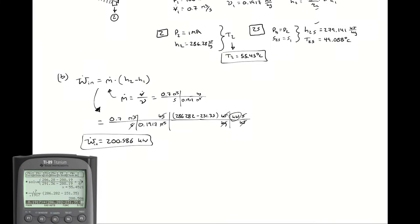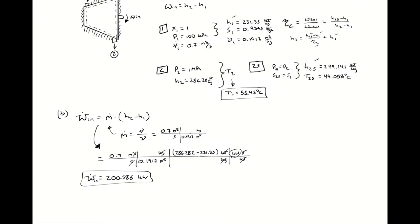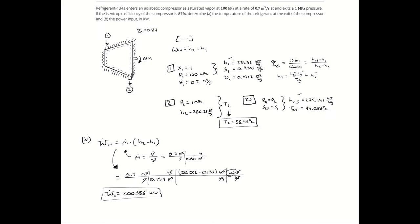So, with a compressor that has an efficiency of 87%, it takes 200.586 kilowatts of power to compress R134a at 0.7 cubic meters per second from an initial pressure and saturated vapor to an exit pressure of 1 megapascal. We also determined that the temperature at the outlet would be 55.45 degrees Celsius.